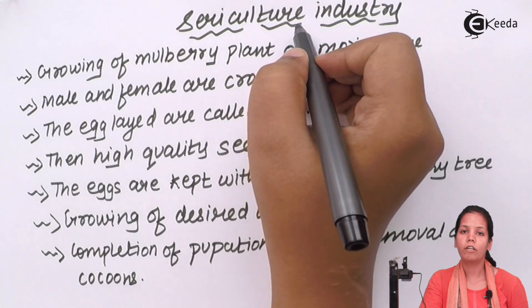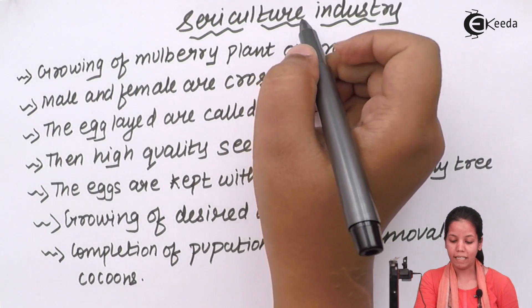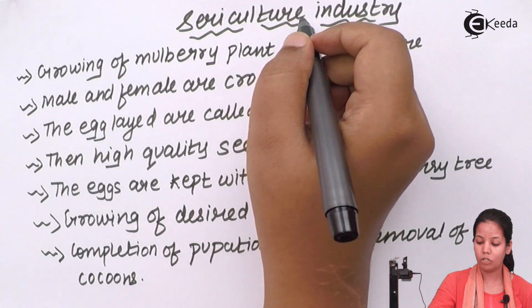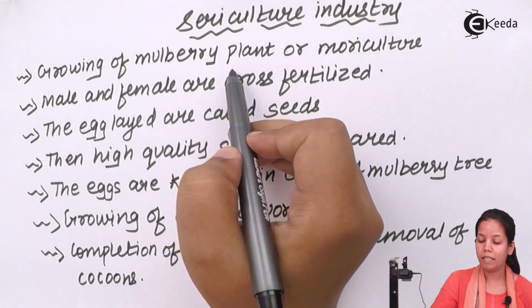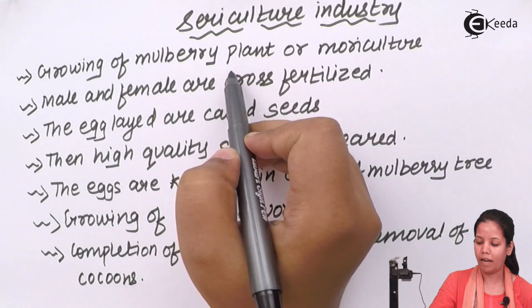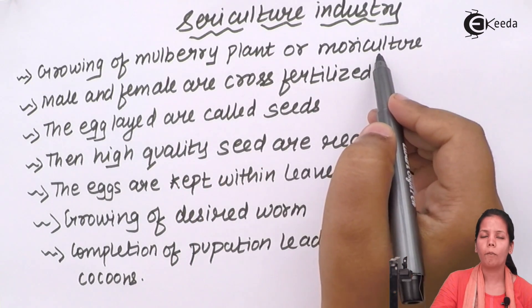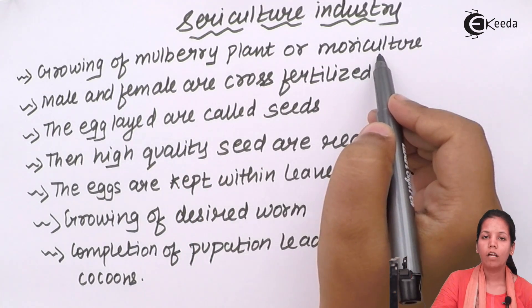Sericulture is the process in which the mulberry plant is planted. This is also called mori culture.